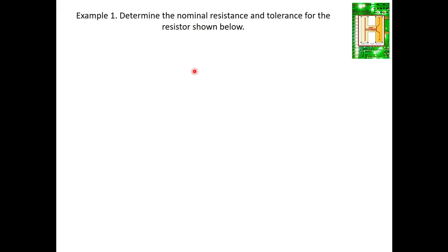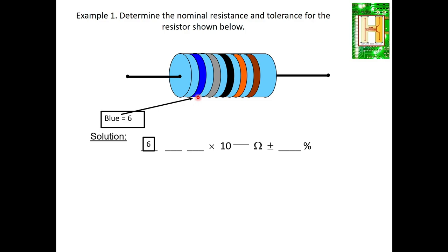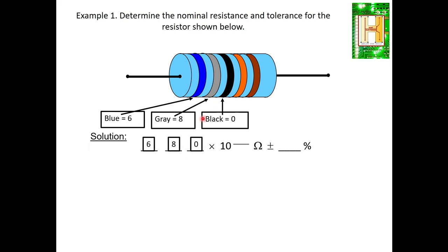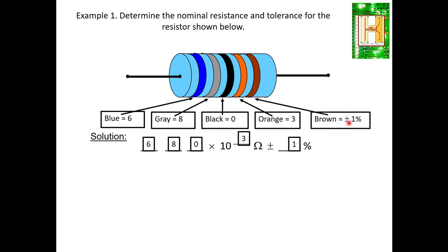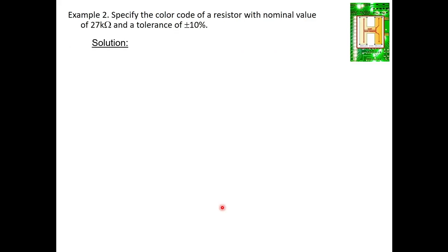Example 1: Determine the resistance and tolerance of the given five-band resistor. Blue = 6, gray = 8, black = 0 (three significant digits). The multiplier band is orange = 10³ (add three zeros). The last band is brown = ±1% tolerance. Altogether: 680 × 10³ = 680 kilohm with ±1% tolerance.